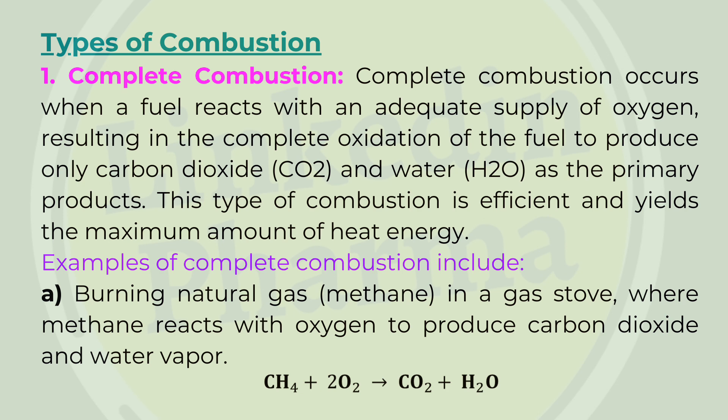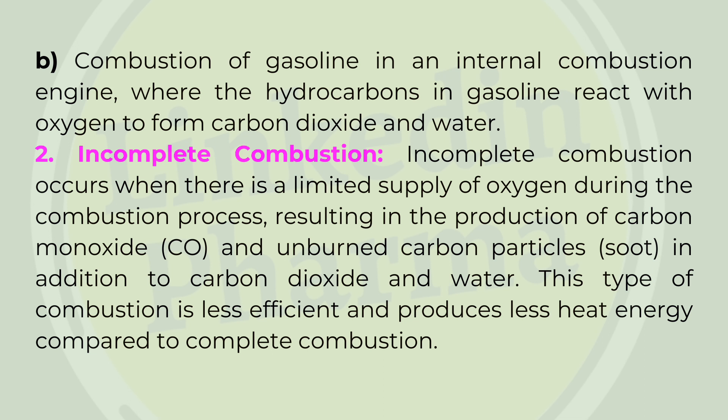Types of combustion. 1. Complete combustion — occurs when a fuel reacts with an adequate supply of oxygen, resulting in the complete oxidation of the fuel to produce only carbon dioxide and water as the primary products. This type of combustion is efficient and yields the maximum amount of heat energy. Examples include burning natural gas (methane) in a gas stove, where methane reacts with oxygen to produce carbon dioxide and water vapor, and combustion of gasoline in an internal combustion engine.